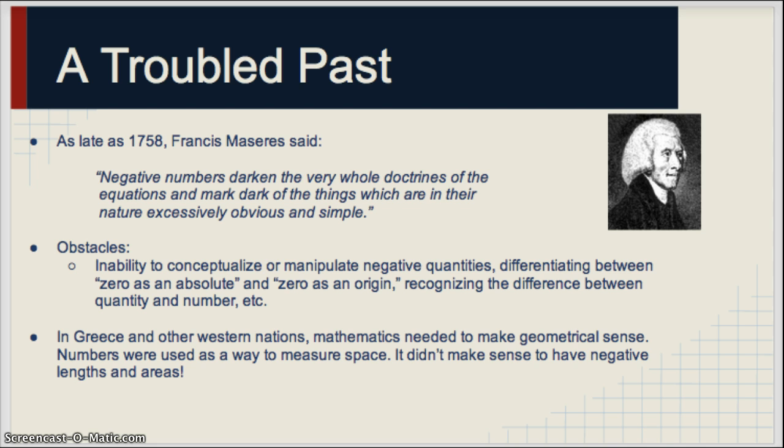And another thing that kind of went into this was that Western societies, including Greece, were so predominantly geometrical. So negative numbers in geometry just didn't add up for them. If you think about it like this, you can't have a negative area, you can't have a negative length. So because negative numbers didn't make geometrical sense, their acceptance in Greece and other Western nations was not one of the first things to be discussed.